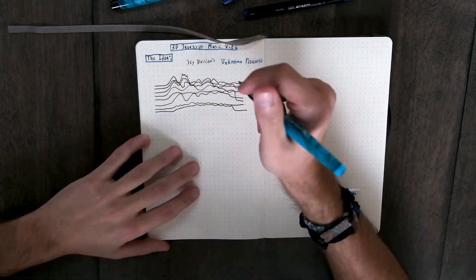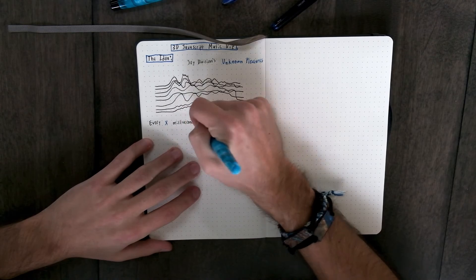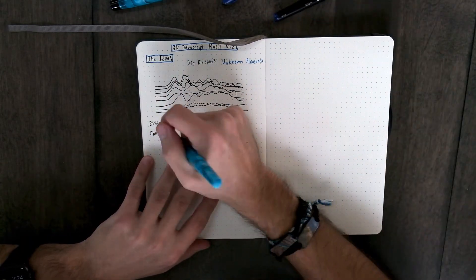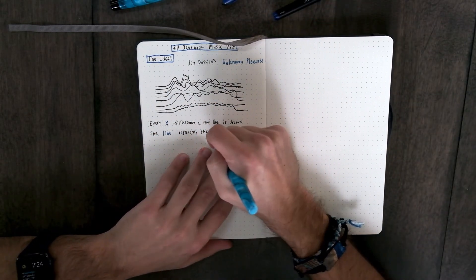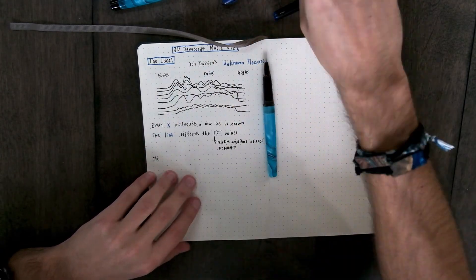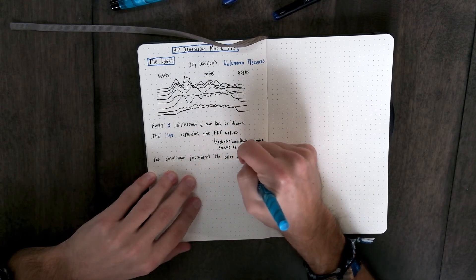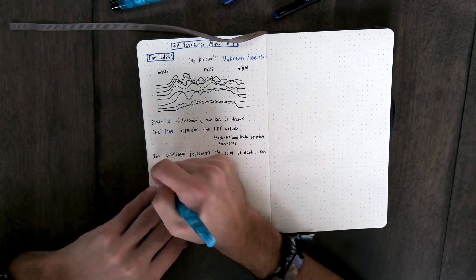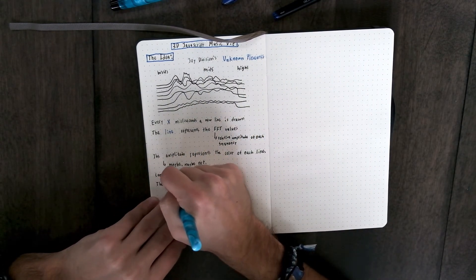Each line represents the frequency count of the song at that point in time, and then slowly the lines will move backwards towards the back of the screen as the song progresses and new lines will appear to fill their place. The amplitude might also represent the color of each line, but maybe not, and then I might also have the camera move around slowly.